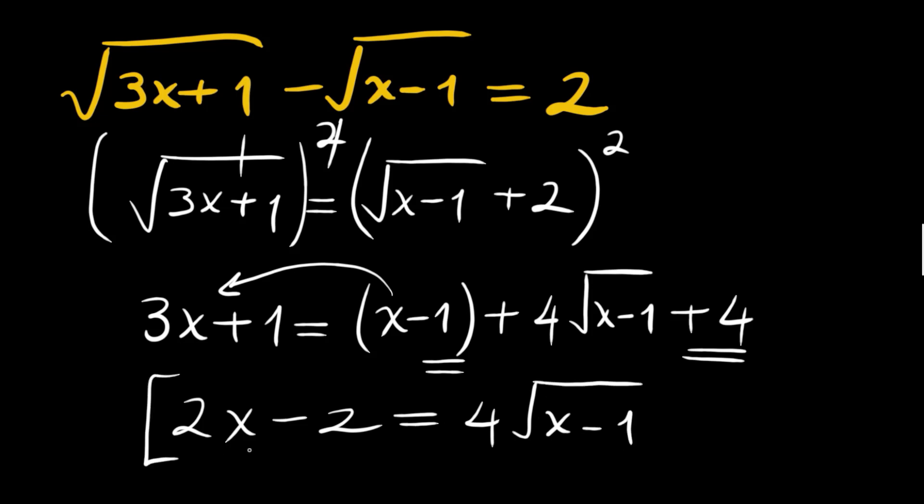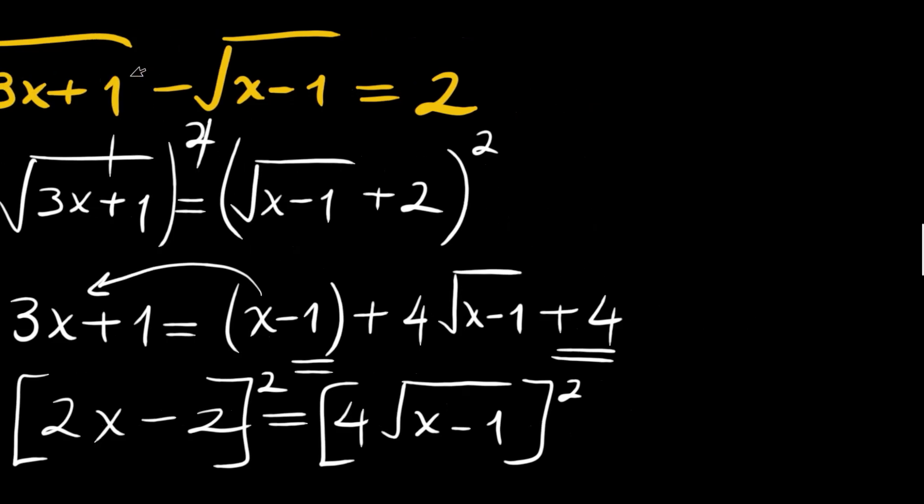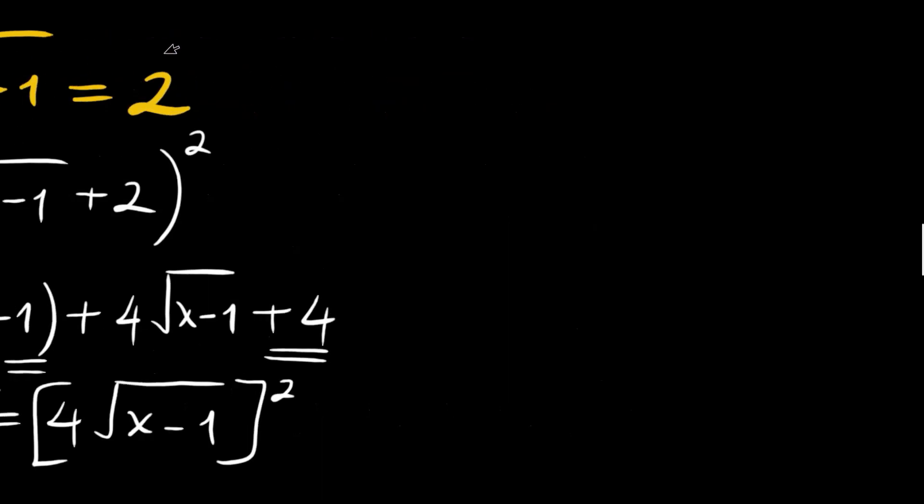Now we will square this one more time to get rid of this square root. And we will write 2x minus 2 squared is 4x squared minus 8x plus 4. The right hand side will become 16 times x minus 1, which is 16x minus 16.